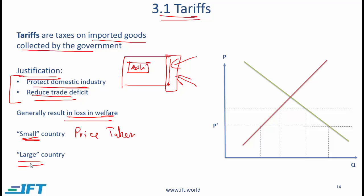A large country is one where the imports or the behavior of that particular country has a substantial impact on the price of the good in question. The United States, for example, would have a substantial impact on the prices of cars in the global market. If the United States were to impose tariffs on car imports, that would impact the global auto industry. So the United States is not a price taker in this context. Most countries tend to be small, and that is the scenario we will first discuss.